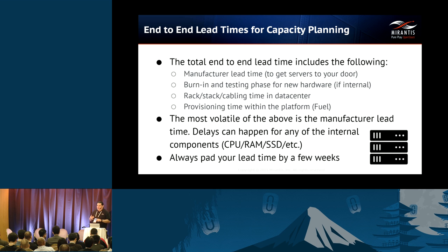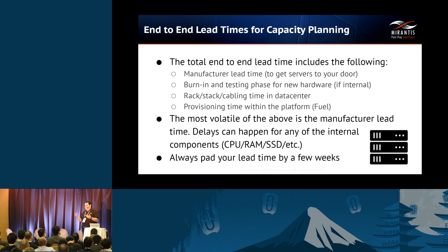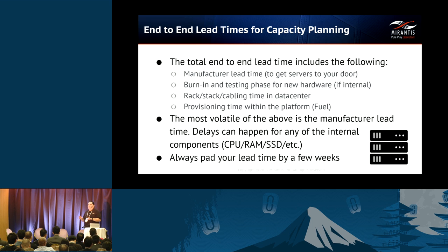The most volatile of all of these is the manufacturer lead time. Delays can happen for any kind of internal component problem. Depending on the scale at which you're operating, you can go to the manufacturer and say you need 500 new servers in two weeks, and they may not be able to deliver. Or you might have a situation where a natural disaster causes a factory that makes hard drives to go offline and there's a shortage. You have to understand what that is, and you can work with your vendor or VAR to understand the typical lead time and put that into your capacity planning.